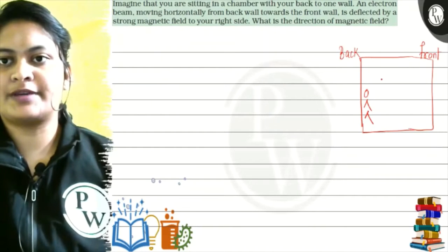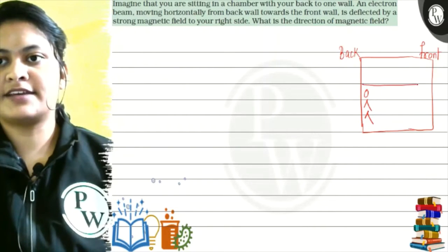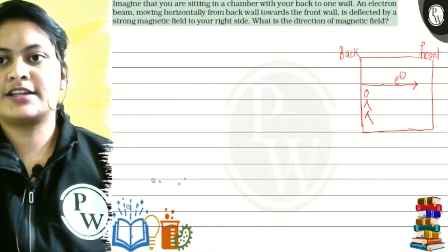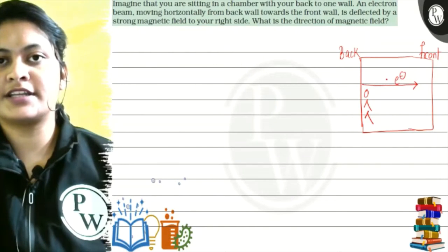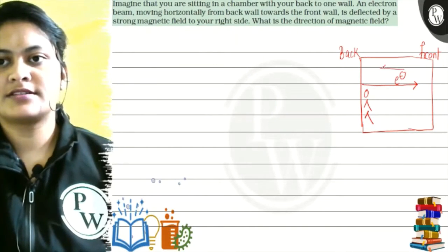So, this is an electron beam which is back to the front. If the electron is going here, what is the current direction? Just as the opposite. Current direction.